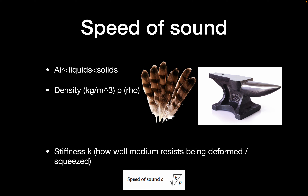The speed of sound varies by medium: lowest in air and gases, higher in liquids, and highest in solids. It depends on density (rho) — how dense that material is — and stiffness (K), which describes how well a medium resists being deformed or squeezed. You can think of these two properties as a series of masses connected by springs.